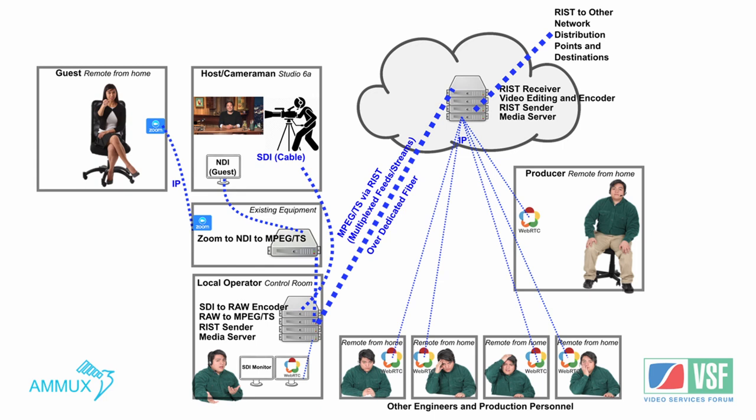In the case of the studio, the RIST link was over internal fiber. So the latency introduced by RIST was insignificant because we can fine-tune the parameters to a very low buffer. The buffer of a RIST connection ideally should be six times the round-trip time. In this particular taping, it was fiber, so 50 milliseconds was enough.